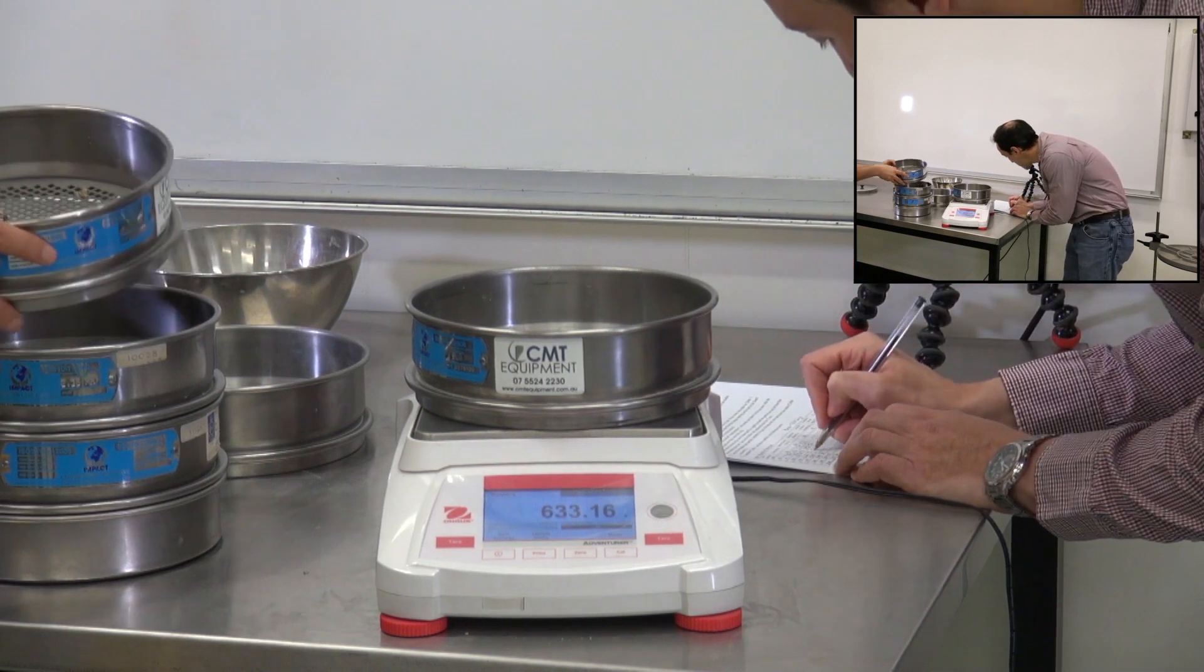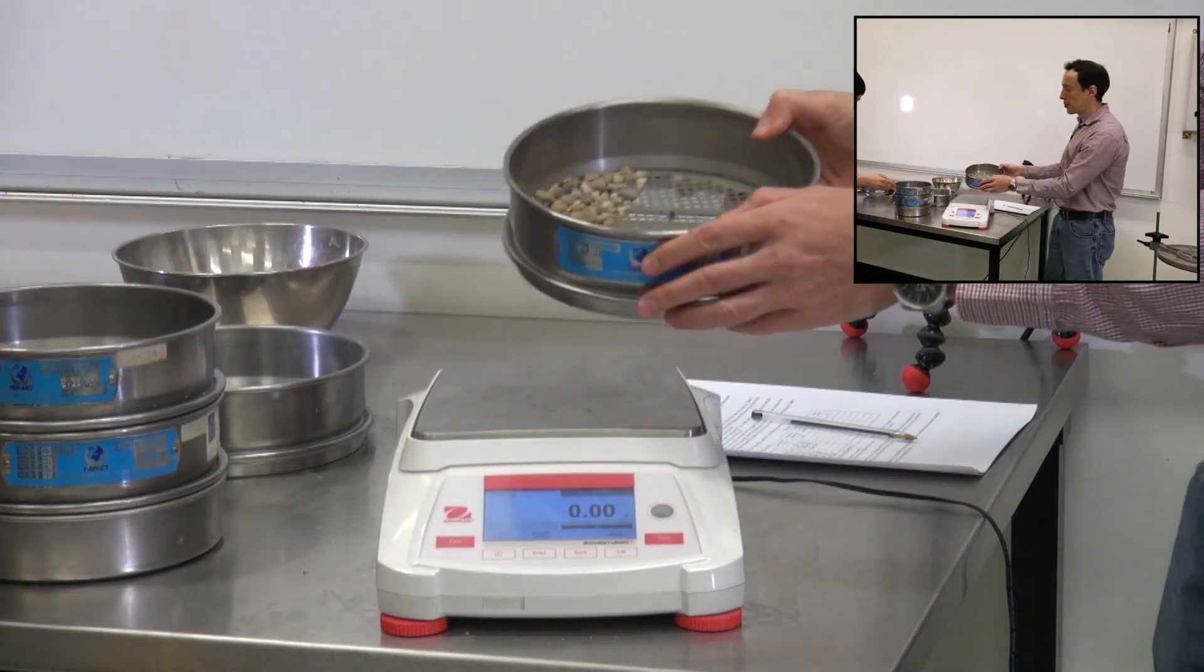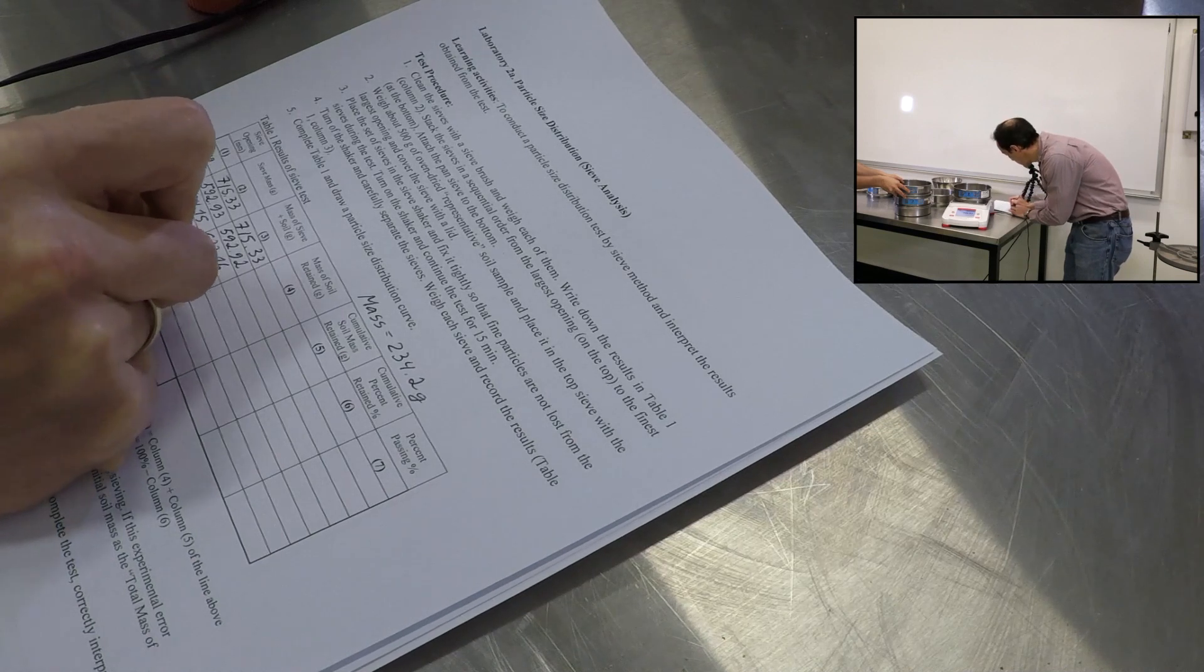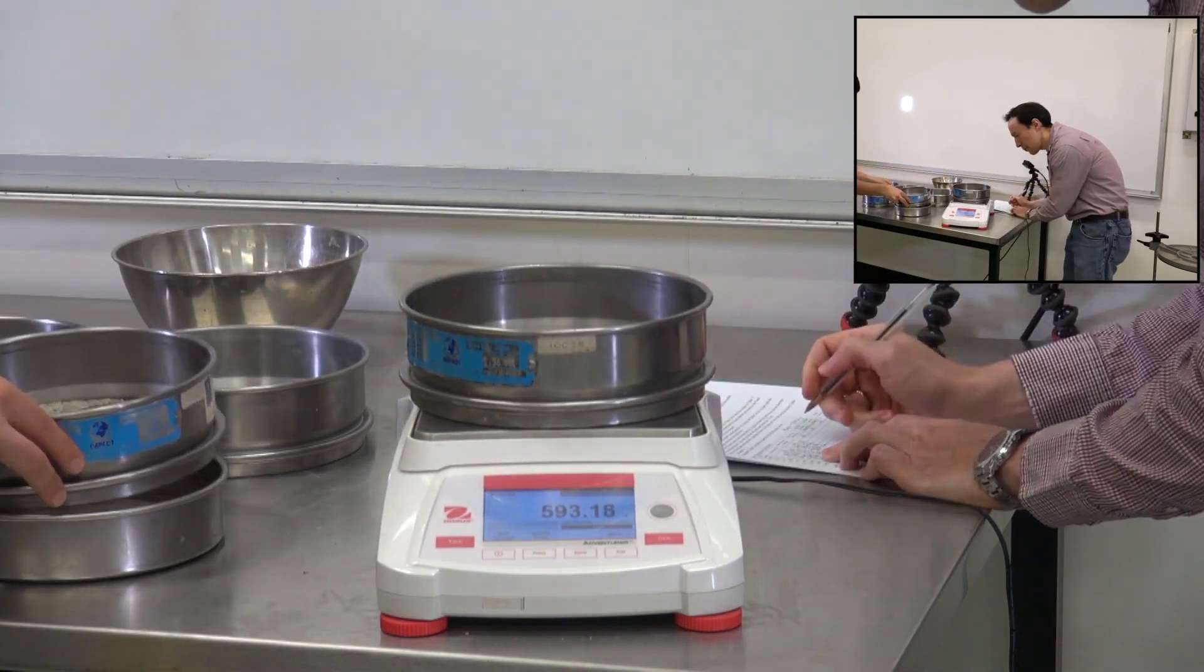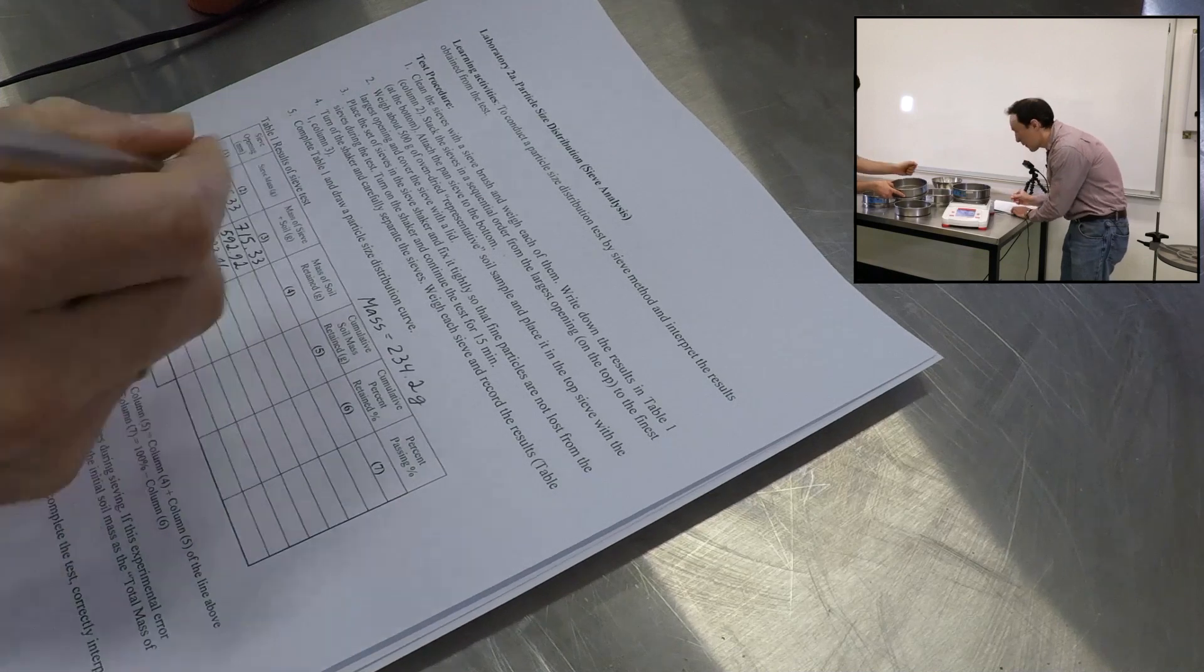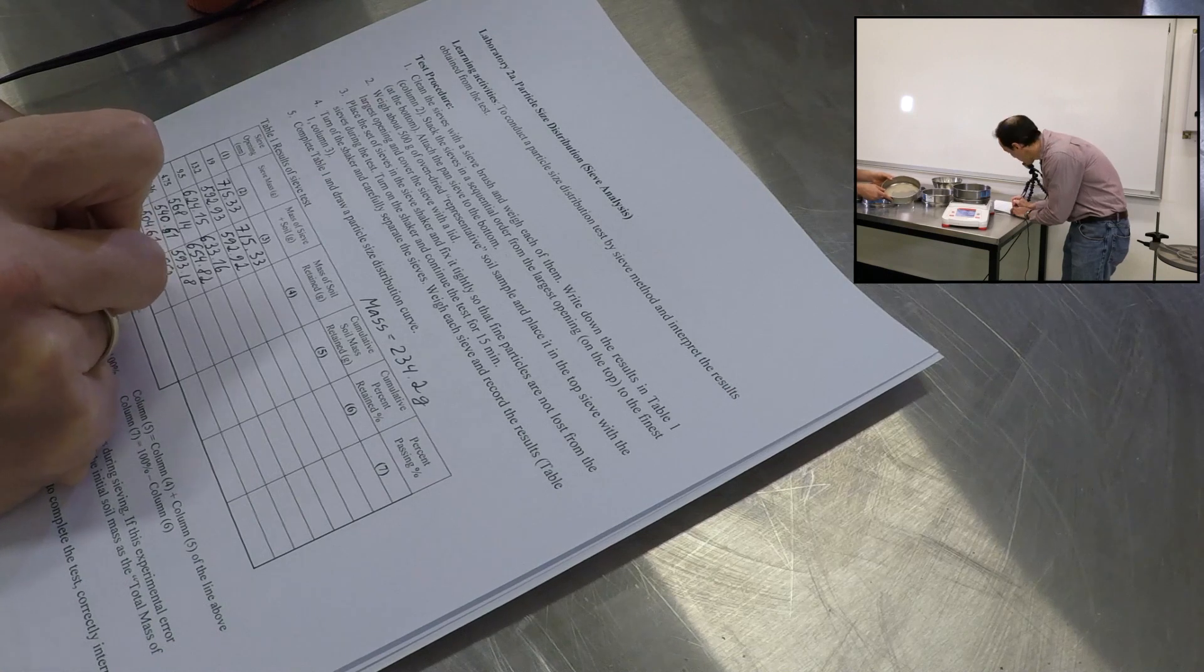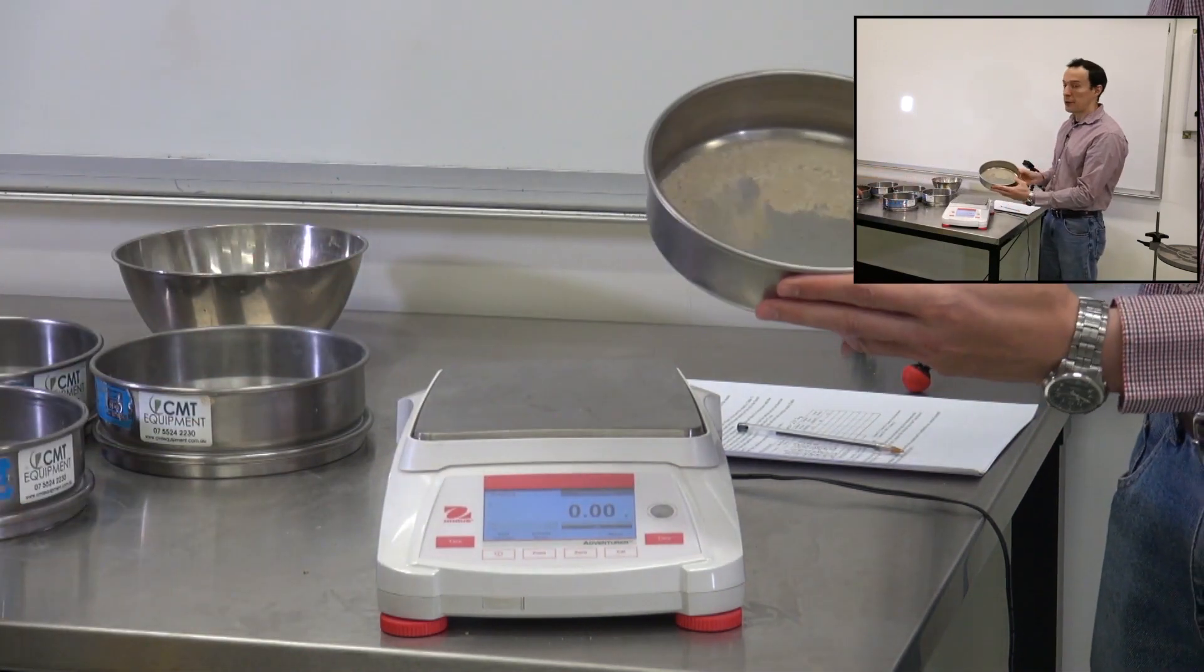We have a little bit more rocks in the next sieve. The next sieve will give us 593 grams. This is the pan, the final sieve, these are the final particles from the soil.